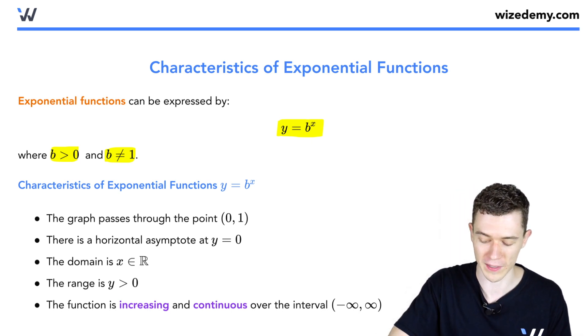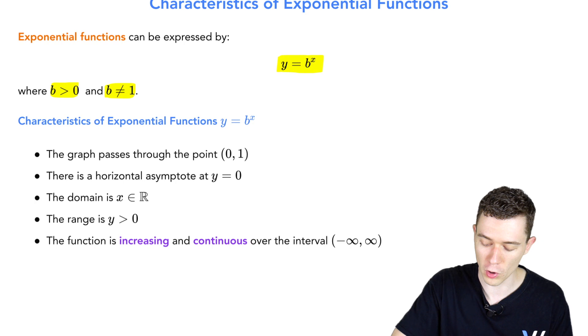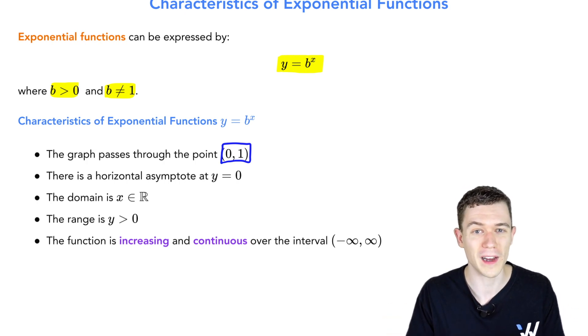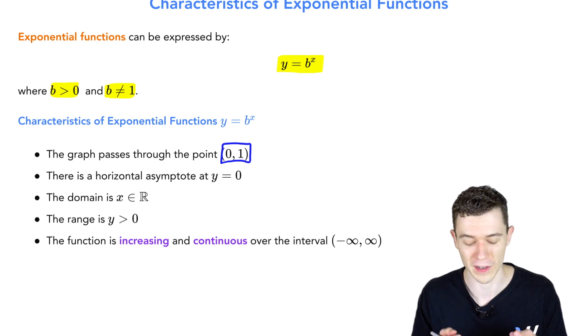So what are some characteristics? Well, this graph goes through the point (0, 1). Why is that? Well, b to the 0, that's 1. If we plug in 0 for x, we should get 1 for y, because any number to the 0 power is 1.